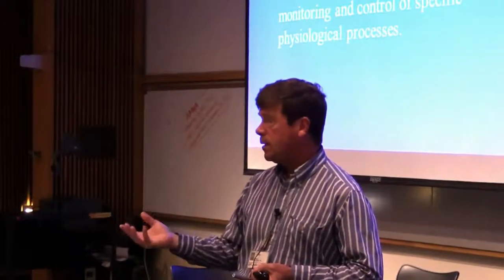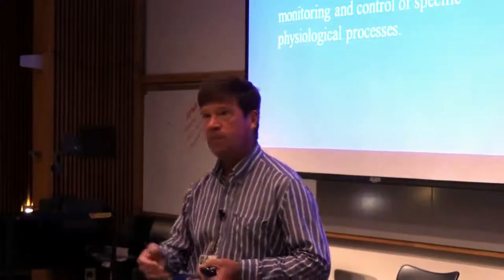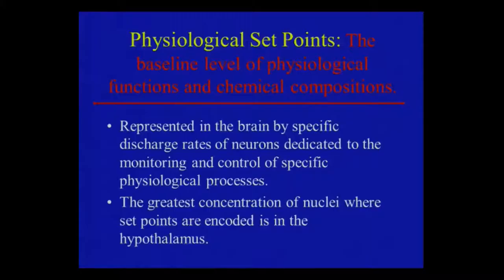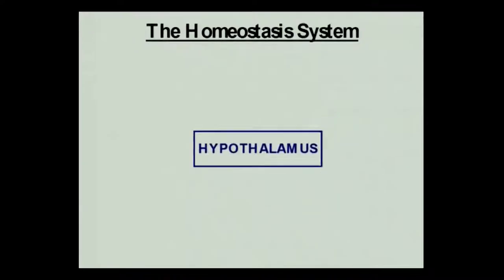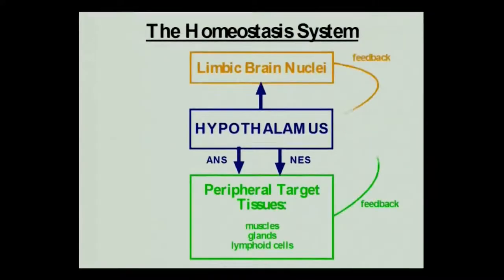The way fever is produced is by simply increasing autonomic tone. The reason the hypothalamus is considered the chief center for homeostatic control is because this is where the greatest concentration of nuclei with set point neurons are. That's why we're talking about the hypothalamus first.